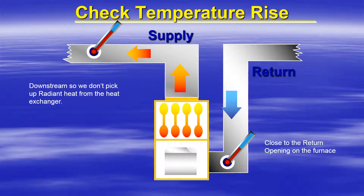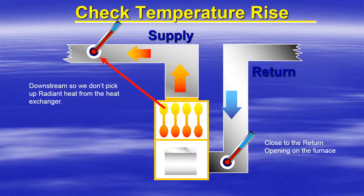To take the temperature rise on a gas furnace, you want to take the return air temperature close to the return opening on the furnace. You then want to take the supply air temperature downstream of the furnace, so you don't pick up radiant heat from the heat exchanger.